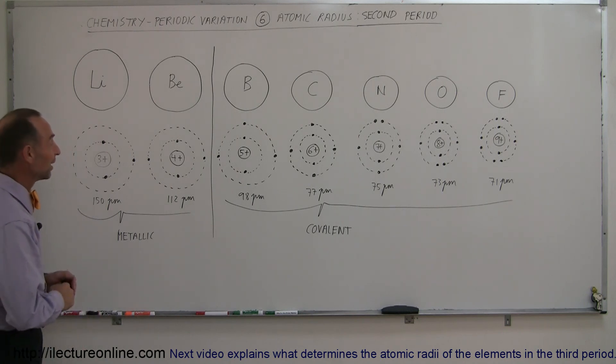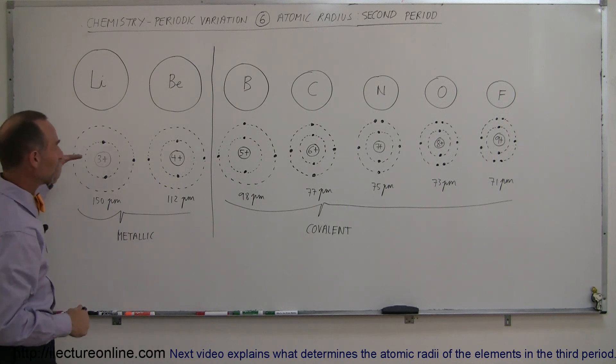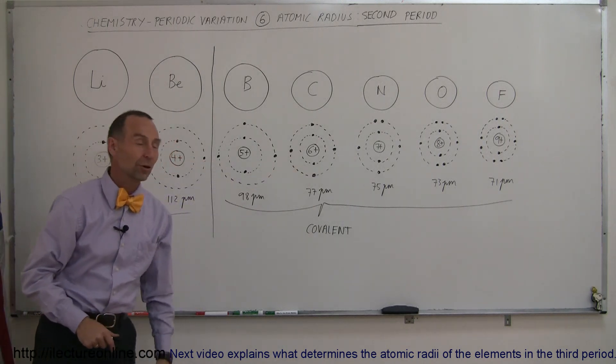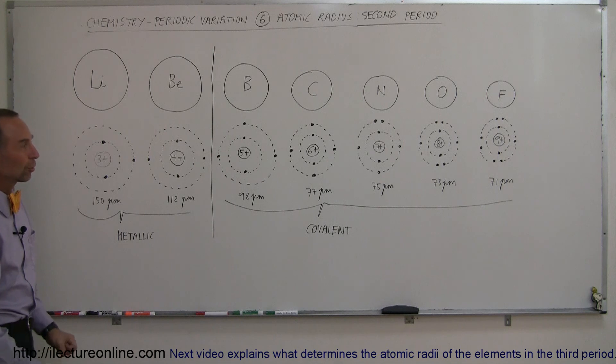So to conclude, you can see that there's a nice periodicity here in the second period, as you can see where the radii do get smaller due to the attractive force of the nucleus to the electron charges around the nucleus.